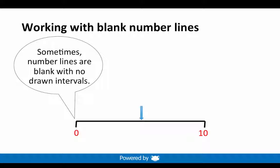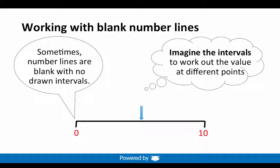Sometimes number lines are blank with no drawn intervals. Look at this example. We need to imagine the intervals to work out the value at different points. The blue arrow points to halfway between 0 and 10 on the number line. The number that is shown is 5.